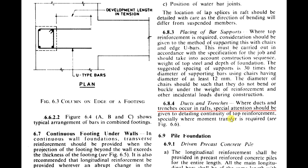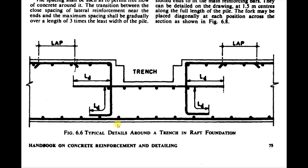Where ducts and trenches occur in a raft, special attention should be given to detailing continuity of top reinforcement, especially where moment transfer is required. As shown in figure 6.6, around a trench in a raft foundation, bars need to be bent with a development length Ld provided. Additional extra bars must be provided for a distance of Ld on both sides of the trench.